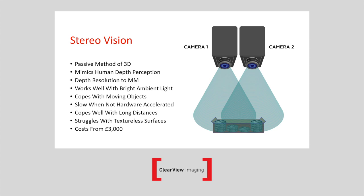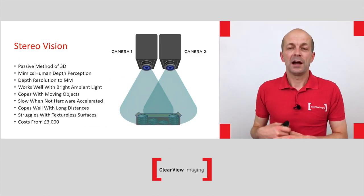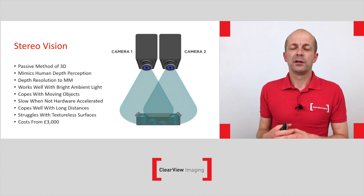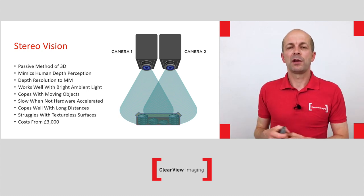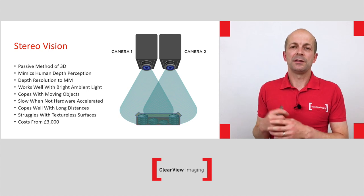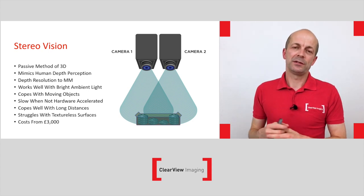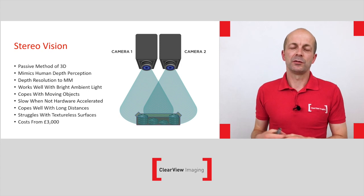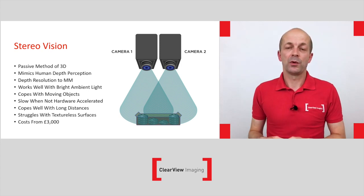Stereo vision struggles with textureless surfaces. If you're trying to get 3D information from a white wall, for example, you would probably need to use some kind of light source — a laser grid or similar — to project some texture onto the surface. In terms of cost, it's at the lower end, roughly around £3,000 for the camera setup itself — referring to the 3D camera hardware, not necessarily the entire vision system.